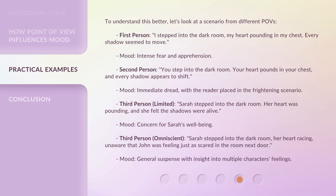To understand this better, let's look at a scenario from different POVs. First person: 'I stepped into the dark room, my heart pounding in my chest. Every shadow seemed to move.' Mood: intense fear and apprehension. Second person: 'You step into the dark room, your heart pounds in your chest, and every shadow appears to shift.' Mood: immediate dread, with the reader placed in the frightening scenario.